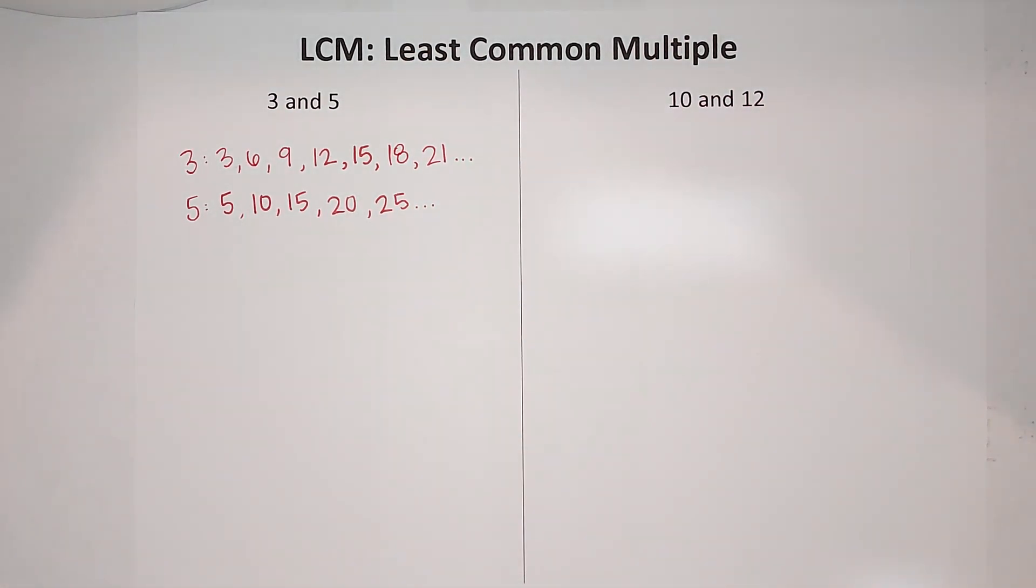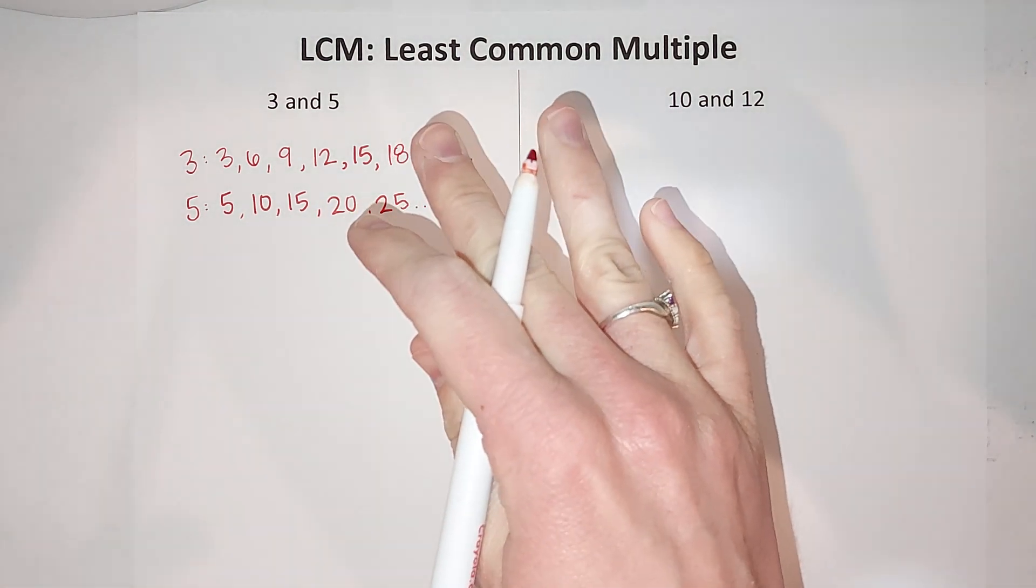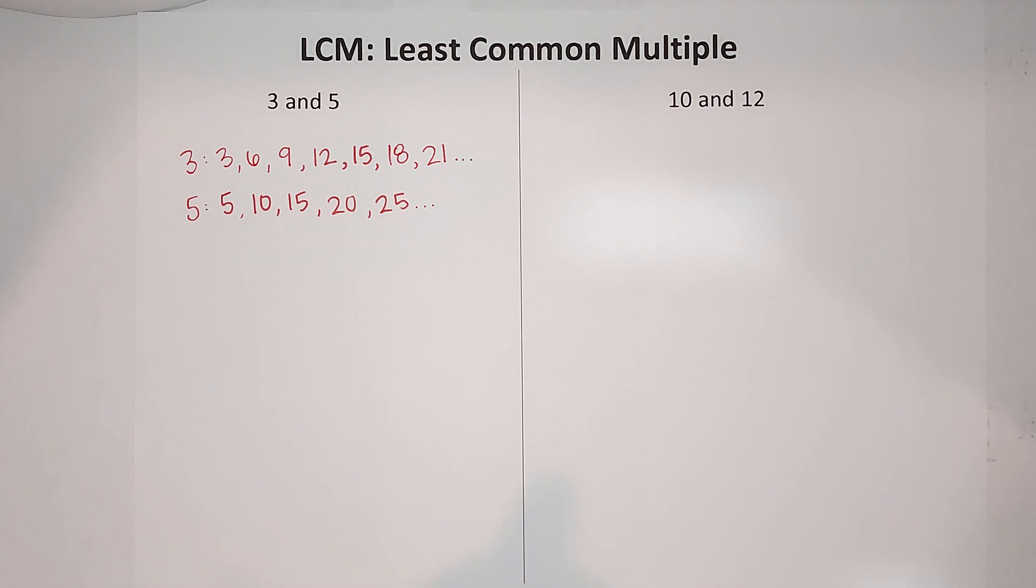We want the smallest one, the smallest multiple, the least. What is the smallest number that is a multiple of both of these?